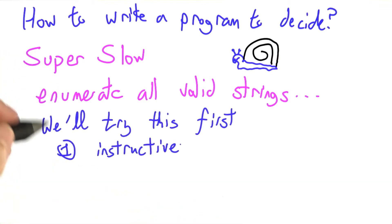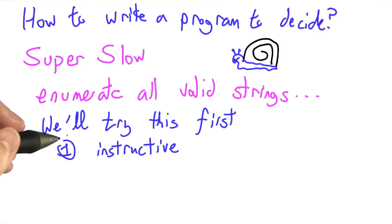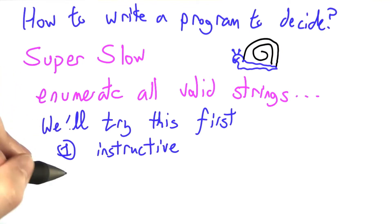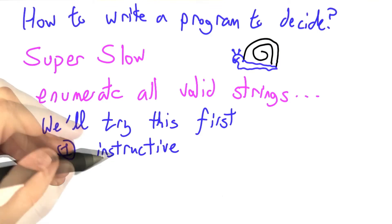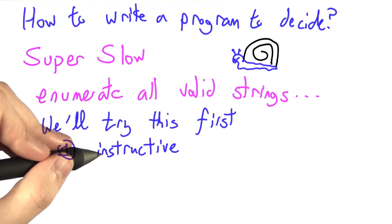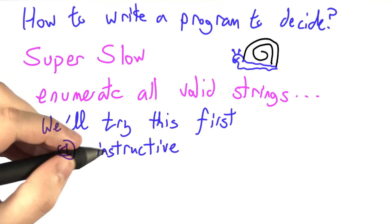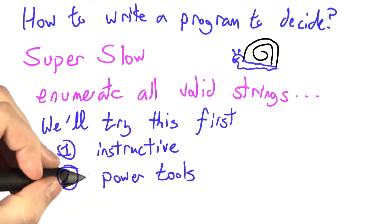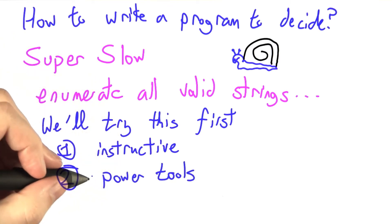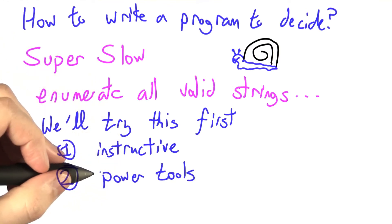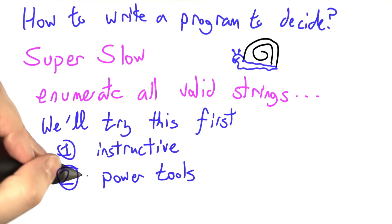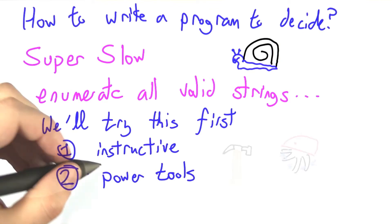We're going to try this approach first, even though we have some intuition that it's not going to work out. The reasons are: one, it's instructive to see why we need more complicated parsing techniques later, but also because it gives us a chance to learn a little bit more about Python and some cool programming techniques that will help you in this class and later on.